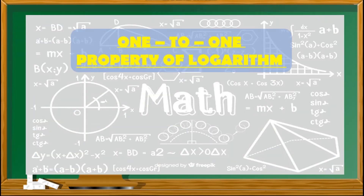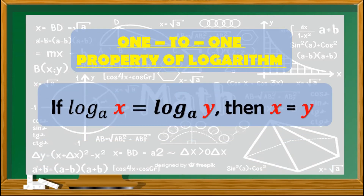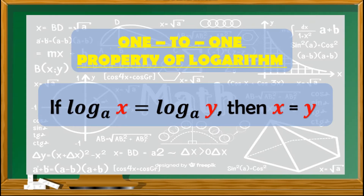Another important property is the one-to-one property of logarithm. If logarithm of x with base a is equal to the logarithm of y with base a, then x is equal to y. This property states that if an equation contains only two logarithms on opposite sides of the equal sign having the same base, then the problem can be solved by simply dropping the logarithms.